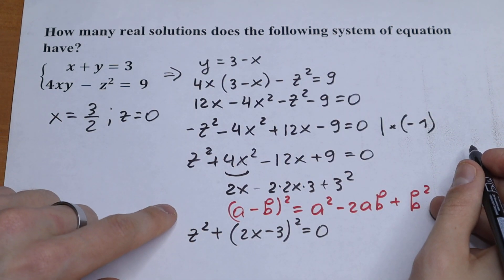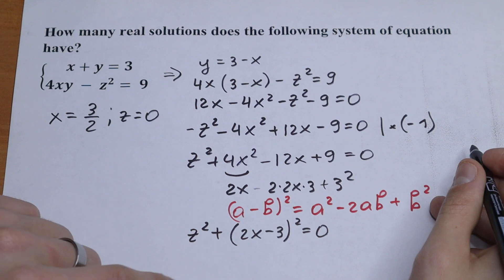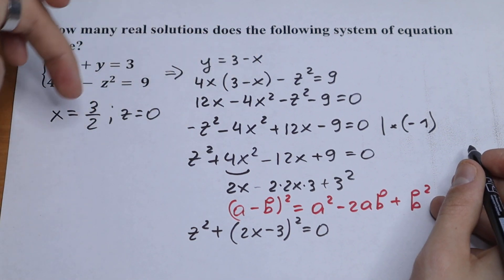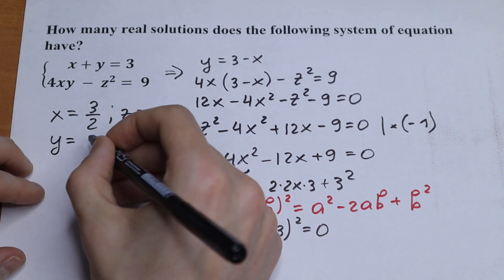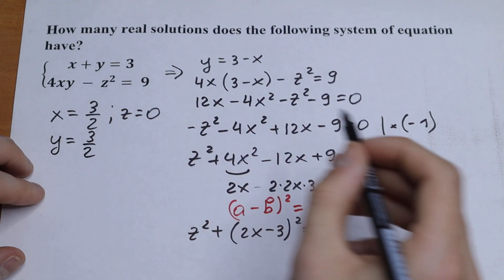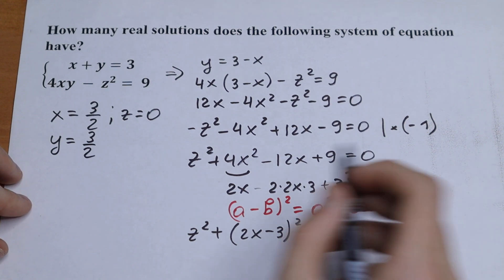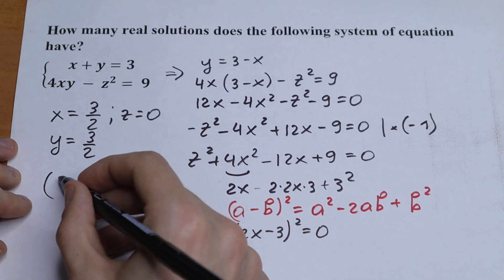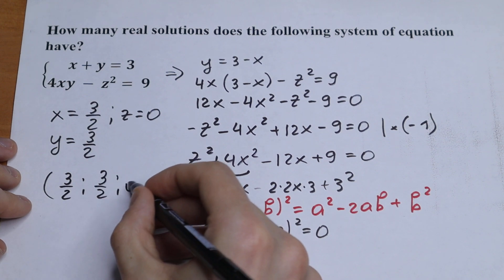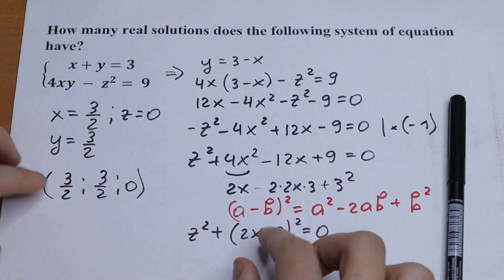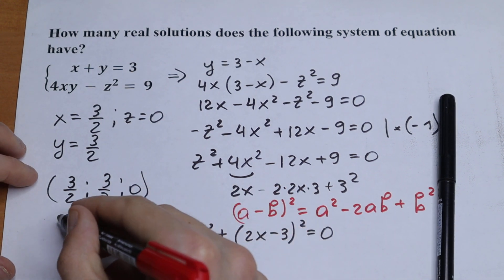So the corresponding y value is also 3 half. From here put this 3 half right here and we will have our answer. So y equal to 3 half. And we will have our pairs. If we write in brackets we will have x, y, z. We will have 3 half, we will have 3 half, and we will have 0. So this is one and only answer to this interesting system of equation.